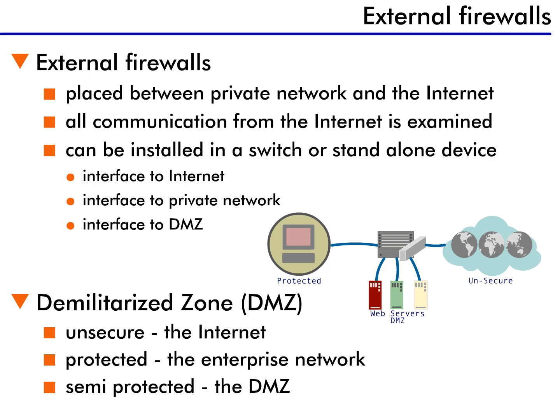The DMZ is the demilitarized zone. A demilitarized zone is an unoccupied area located between two hostile forces. For example, the area between North and South Korea is a demilitarized zone. So what do DMZs have to do with firewalls? Well, it's analogous. The DMZ, which is the third connection of a firewall, is where the web servers are placed.